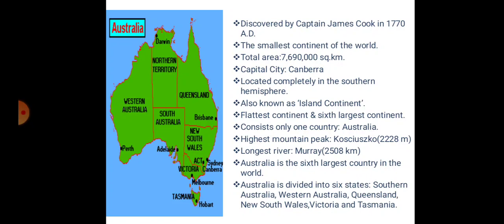Australia is a continent located completely in the southern hemisphere, which includes different unique features of vegetation, plants, and animals. It is also known as the island continent, as it is surrounded by sea and ocean from every side. Australia is the flattest continent of the world and also the sixth largest continent. Being the flattest continent, its shape looks like a sprawling pancake.